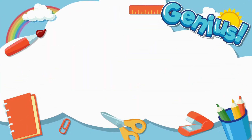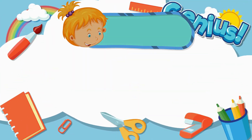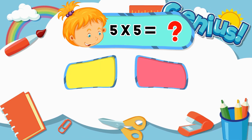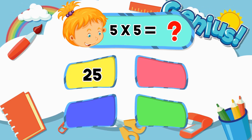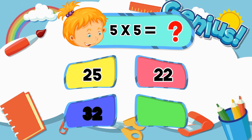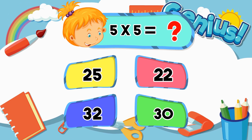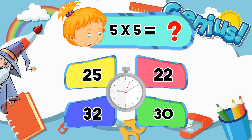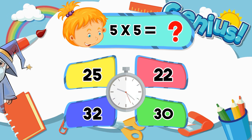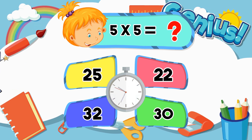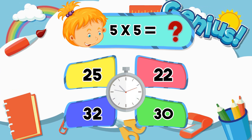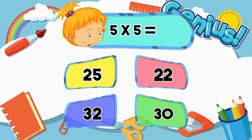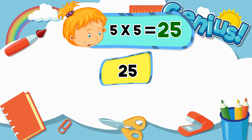What is 5 times 5? 20, 22, 32. Answer: 25.